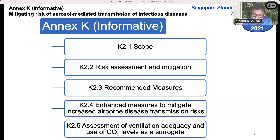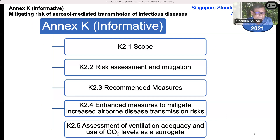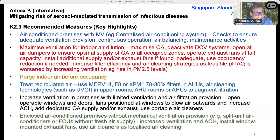We came up with the idea of using CO2 levels as a surrogate — as a means of ensuring that ventilation is reasonable or adequate — just to give us a sense of what's happening in buildings. Remember, this is 2020–2021, the early days of the pandemic, and we had not really been able to put a lot of things into action in buildings at that point in time.